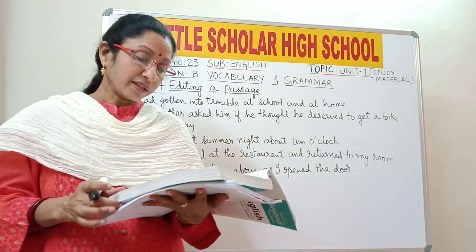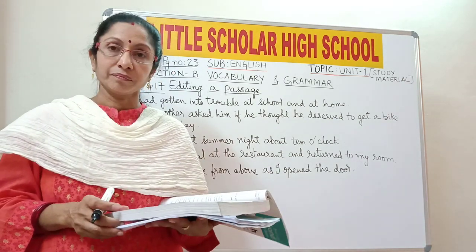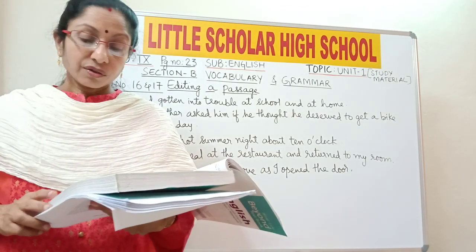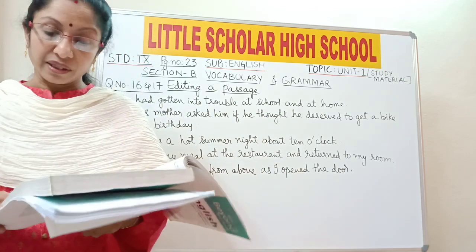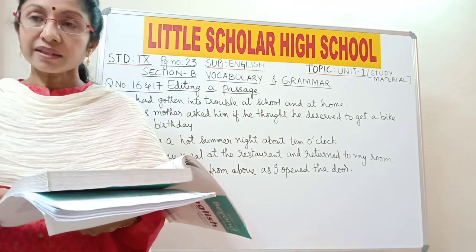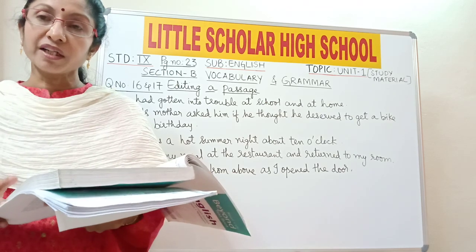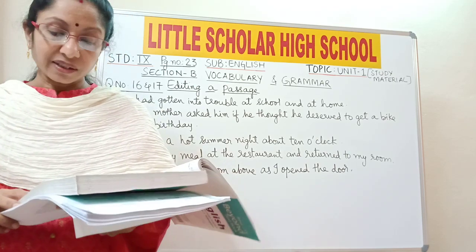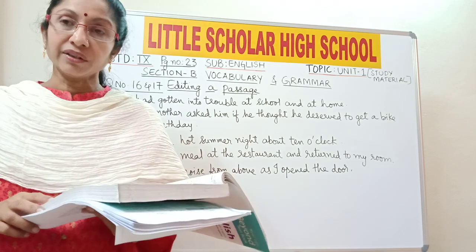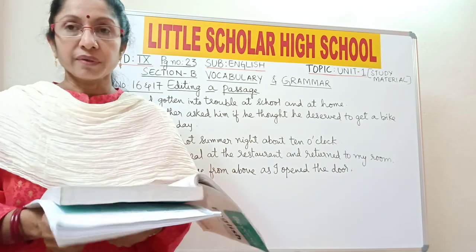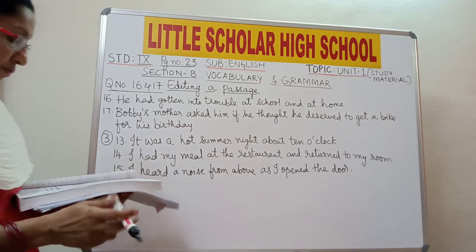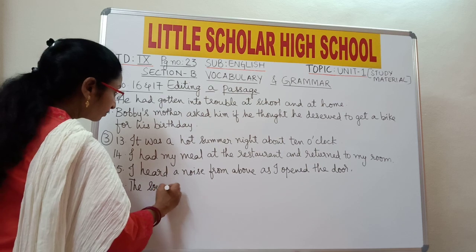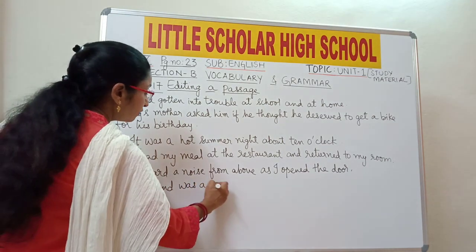Question number 16: 'The sound is a familiar one.' We are talking about something which already happened, so the verb 'is' in present tense should be replaced with the past tense verb 'was.' The answer is: 'The sound was a familiar one.'